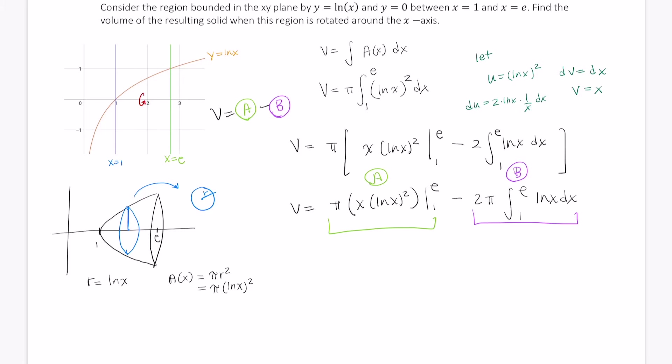All right, so let's take care of A first. With A, I'm at the final step where I just need to evaluate this at the limits of integration. So A is equal to π times e times ln of e quantity squared minus 1 times ln of 1 quantity squared. So this is π times e times 1 squared minus 1 times 0 squared,